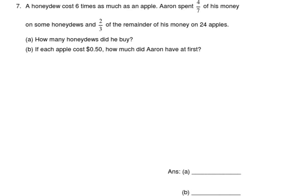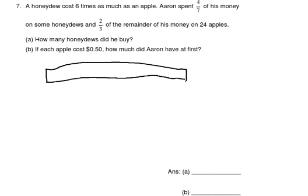A honeydew costs six times as much as an apple, so honeydew is more expensive. Aaron spent four-sevenths of his money on some honeydews and two-thirds of the remainder on 24 apples. How many honeydews did he buy? Let's draw a simple model to represent the total amount of money he has. He spent four-sevenths, so I cut the model into seven parts.